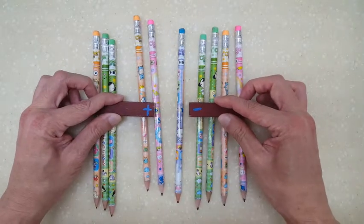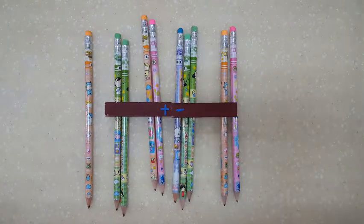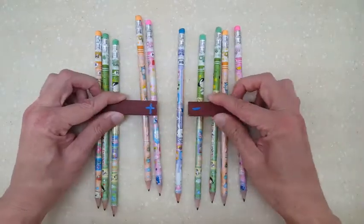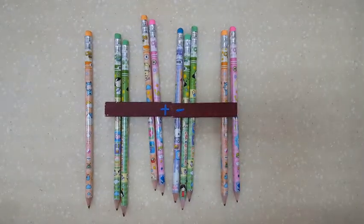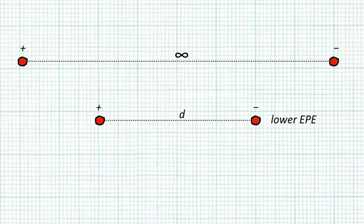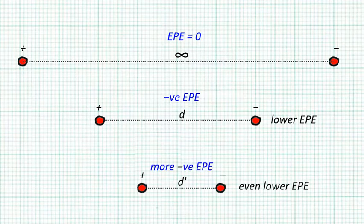For two unlike charges, because they attract each other, we store EPE by pulling them further apart. So closer together is lower EPE than infinitely apart. But infinitely apart is zero EPE, so closer together must be negative EPE. The closer they are, the more negative.